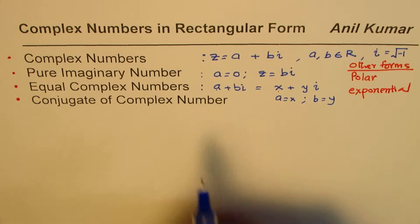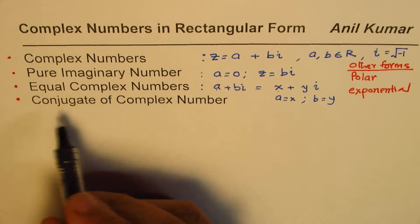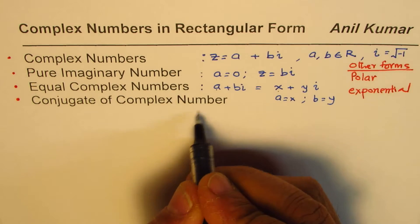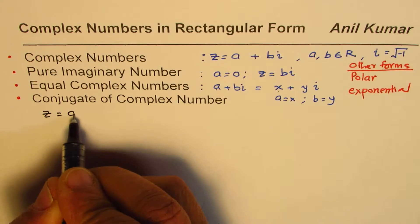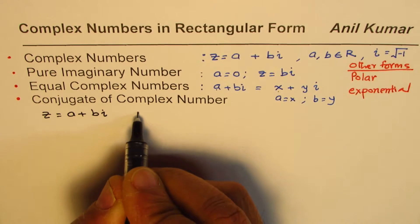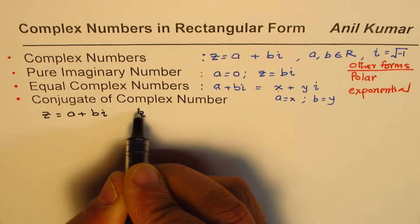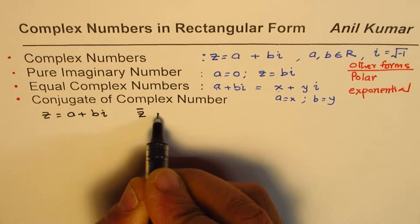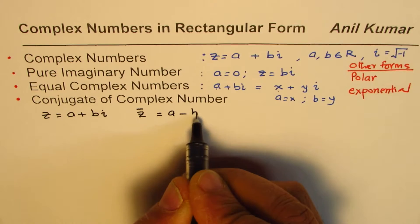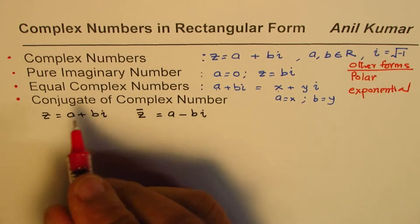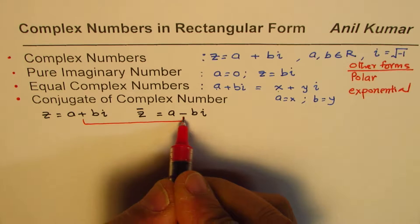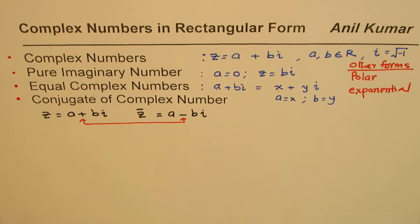The last concept is the conjugate of a complex number. If we have a complex number a plus bi, its conjugate — written with a bar on top — will be a minus bi. What we do is simply reverse the sign of the imaginary part to get the conjugate.